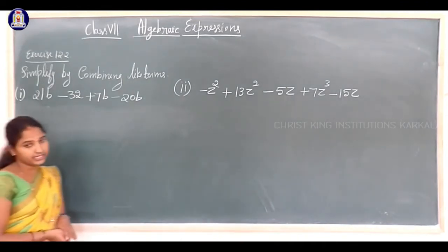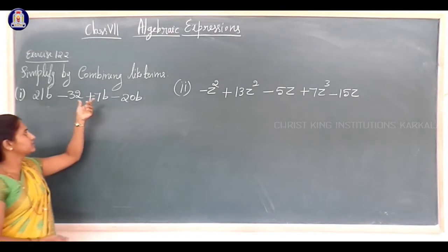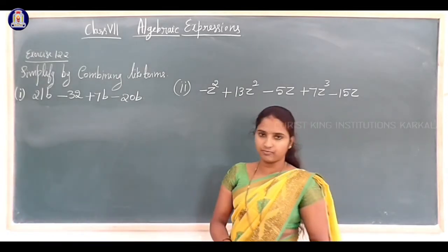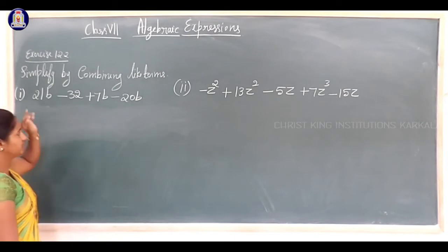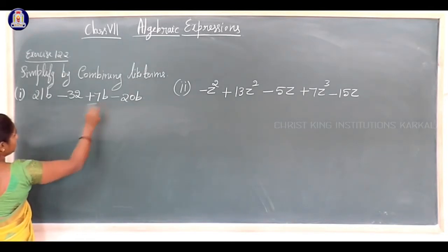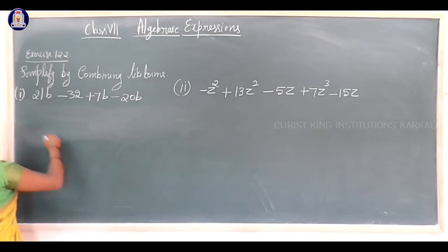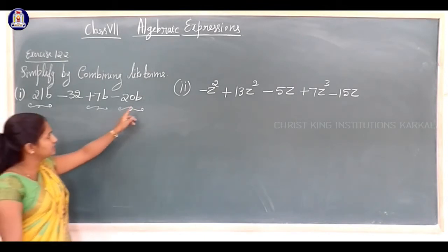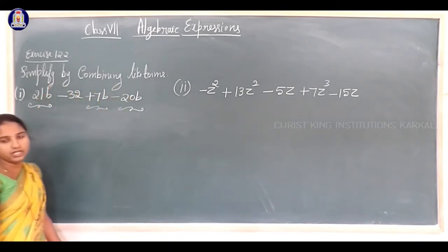Next question: simplify by combining like terms. The first expression is 21b minus 32 plus 7b minus 20b. First you have to combine the like terms. The like terms here are 21b, 7b, and 20b — they all have the same variable b with exponent 1 — so they are like terms. The constant 32 is separate.